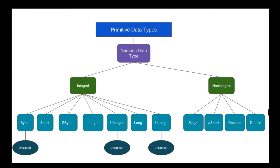The SByte holds one byte of storage allocation and its value ranges from negative 128 through positive 127. The integer is the most common used numeric data type; its storage allocation is four bytes and its value ranges from approximately negative 2,147 million to positive 2,147 million. The UInteger storage allocation is also four bytes and holds values from zero to approximately 4,294 million — basically double the integer from the positive side, since UInteger has no negative numbers and starts from zero.